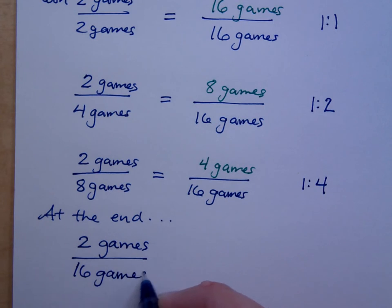At the end, they only won two games! What is the ratio there? That ratio is one to eight! They only won one out of every eight games!